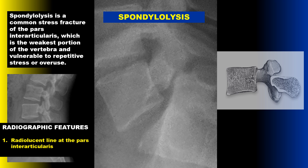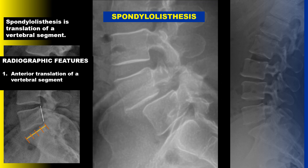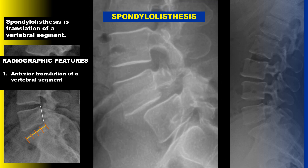Spondylolisthesis is an anterior translation of a vertebral segment. Radiographically, you should see an anterior translation of one segment in relation to the one directly below.